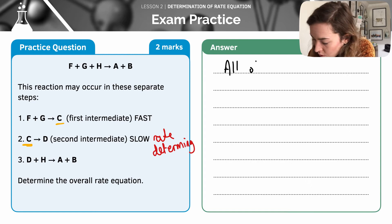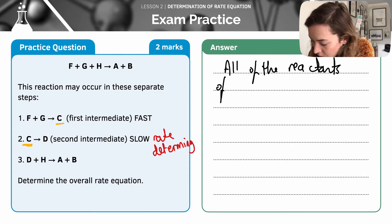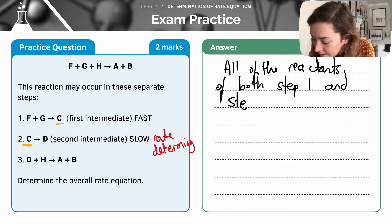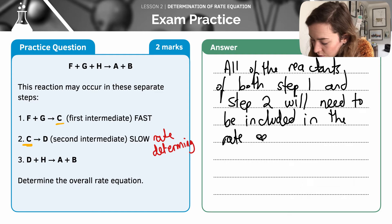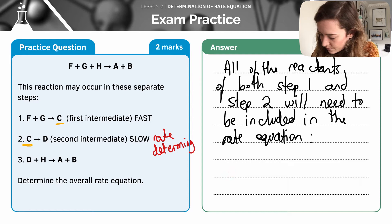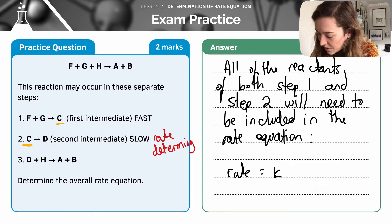This means that step 1 is also going to affect the rate of reaction. All of the reactants of both step 1 and step 2 will need to be included in the rate equation. So the rate equation is: rate = K times F times G times C.